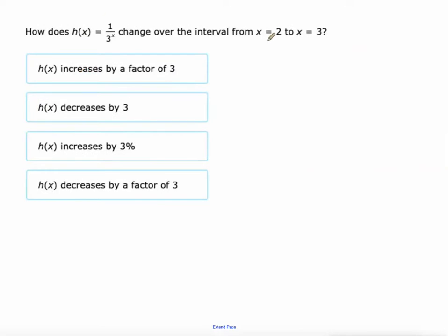Let's look at this. Again, we have this unit interval where x is going up 1. What happens to h of x? Let's try it again. So h at 2 is 1 over 3 squared, which is 1 over 9. Did it increase? No, it definitely got smaller. 1/27th is smaller than 1/9. Did it decrease by 3?